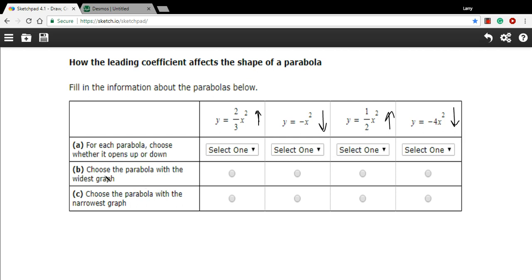Then it says, choose the parabola with the widest graph. And remember, wider graphs were fractions that were less than 1, greater than 0. And let's see, 1 half is the smallest fraction here, the closest one to 0, it's smaller than 2 thirds. So this one is going to have the widest graph.